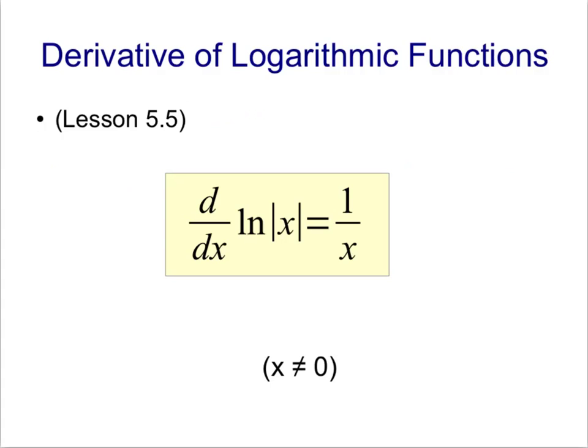This formula came about in the same way that the formula for exponential functions came about. We plug the natural log of x into the definition of derivative, we take that limit as h approaches 0, and this is what pops out. For our course, we're not going to prove that derivative formula with the limit, but just keep in mind that process did take place.